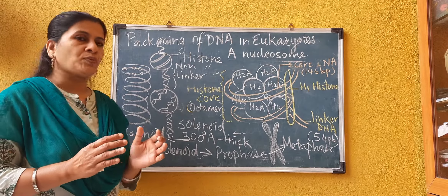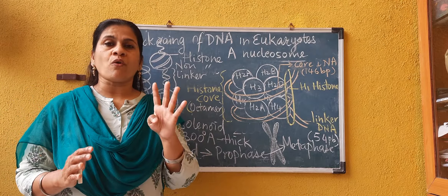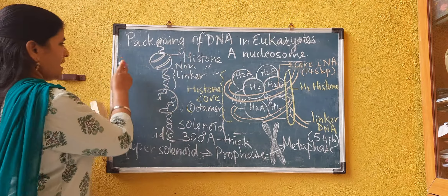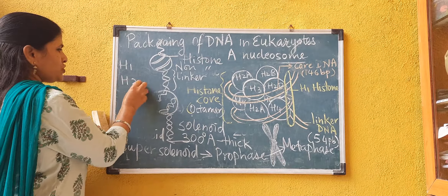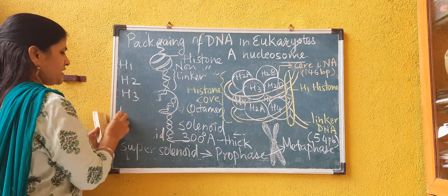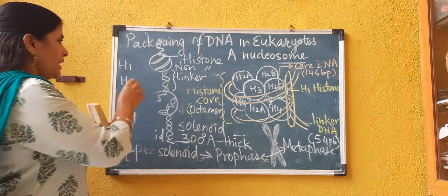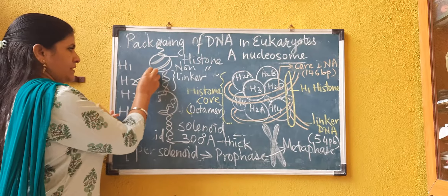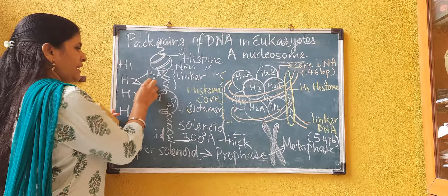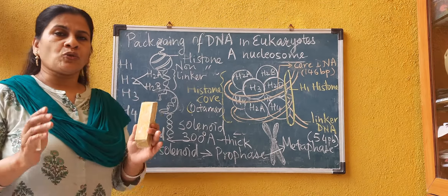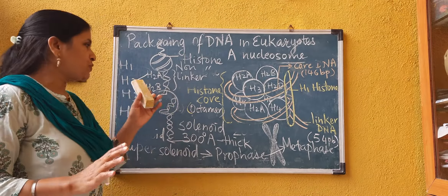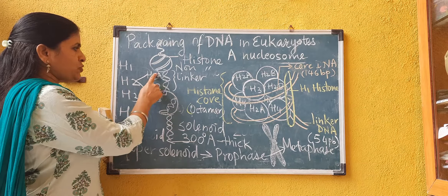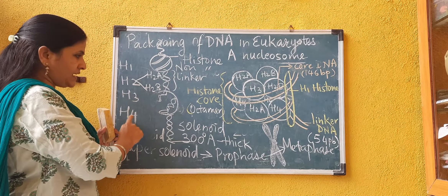Histone proteins are of four types: H1, H2, H3, and H4. H2 protein is again of two different subtypes — H2A and H2B. So in total we can say there are five histone proteins: H1, H2A, H2B, H3, and H4. Here H indicates histone.